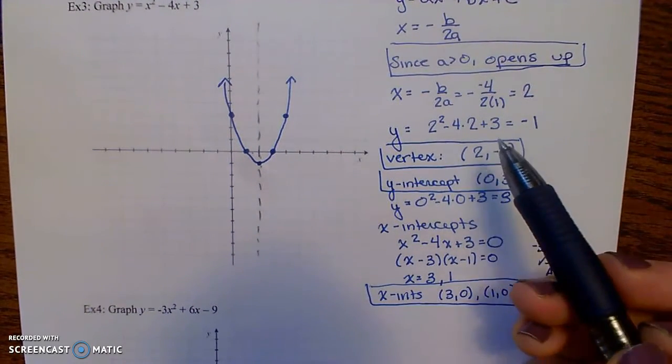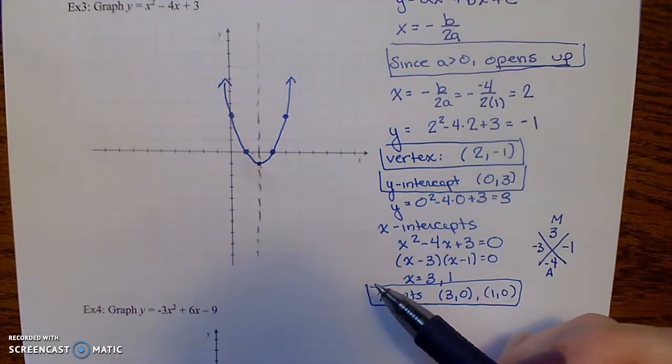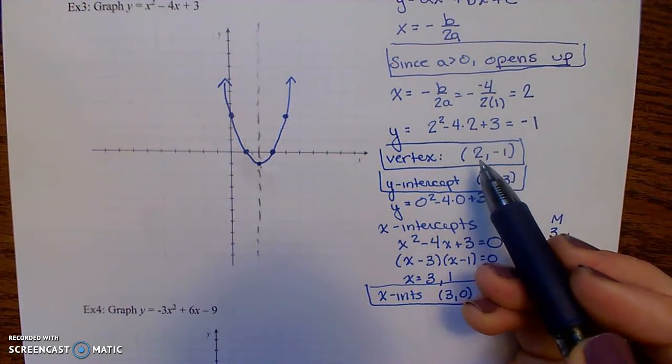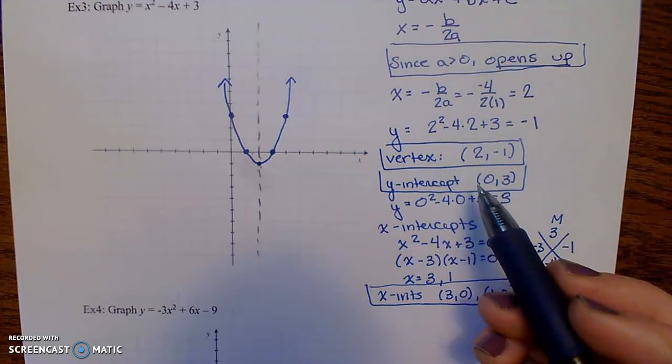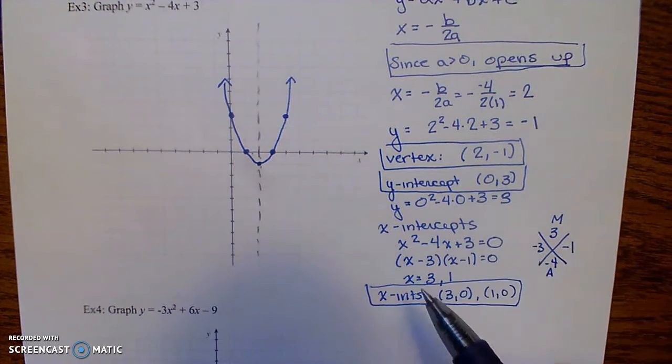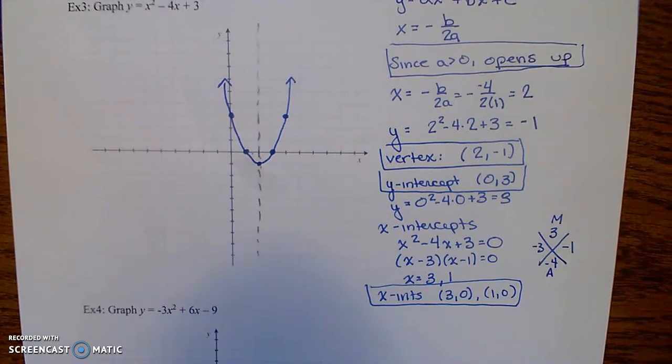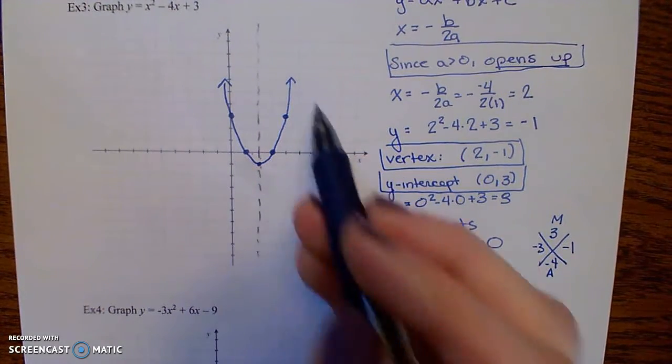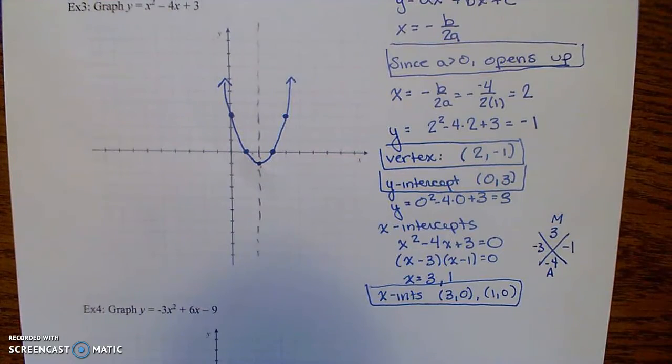If they don't, then here are some key values you might want to plug in. Definitely find the vertex. Y-intercept is an easy number to find. And then solving for your x-intercepts or plugging any other value in to give you a couple more points on the parabola so that you can draw a nice, smooth curve.